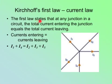Kirchhoff's first law states that at any junction in a circuit, like that one there, the total current entering the junction equals the total current leaving. So in this diagram here, we have two currents entering, this one and that one, and three leaving.